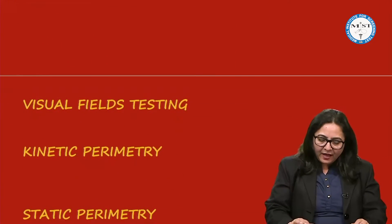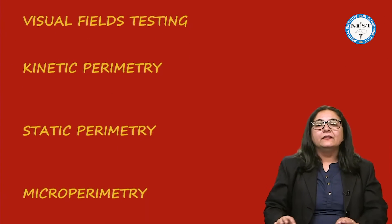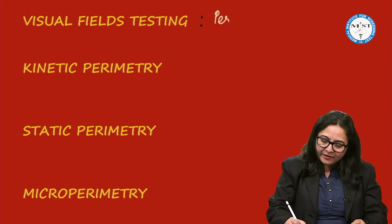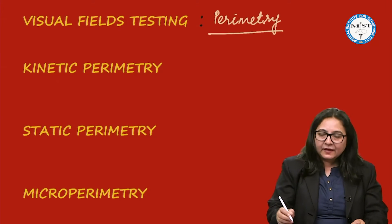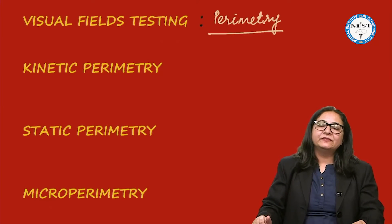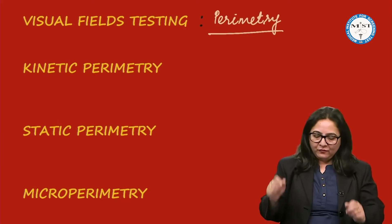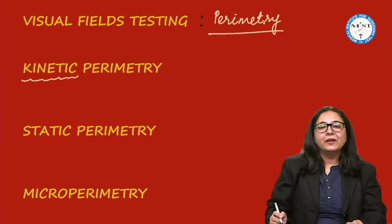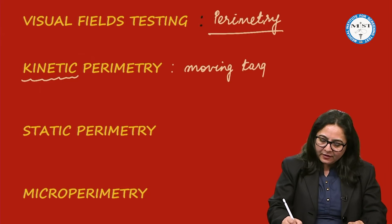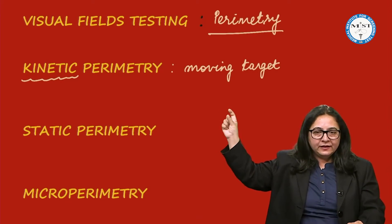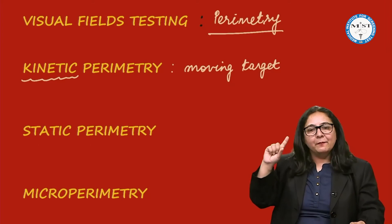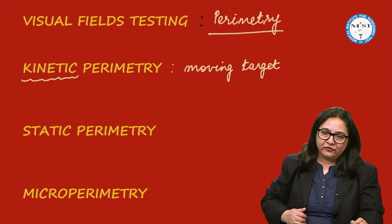When looking bilaterally, these visual fields merge, so the binocular visual field boundary will be different. Visual field testing is done by what is known as perimetry. Perimetry can be divided into kinetic perimetry, static perimetry, and microperimetry. In kinetic perimetry, as the word suggests, a moving target is shown — a target is brought from the outer field to the inner part; the target is of fixed size but moving.